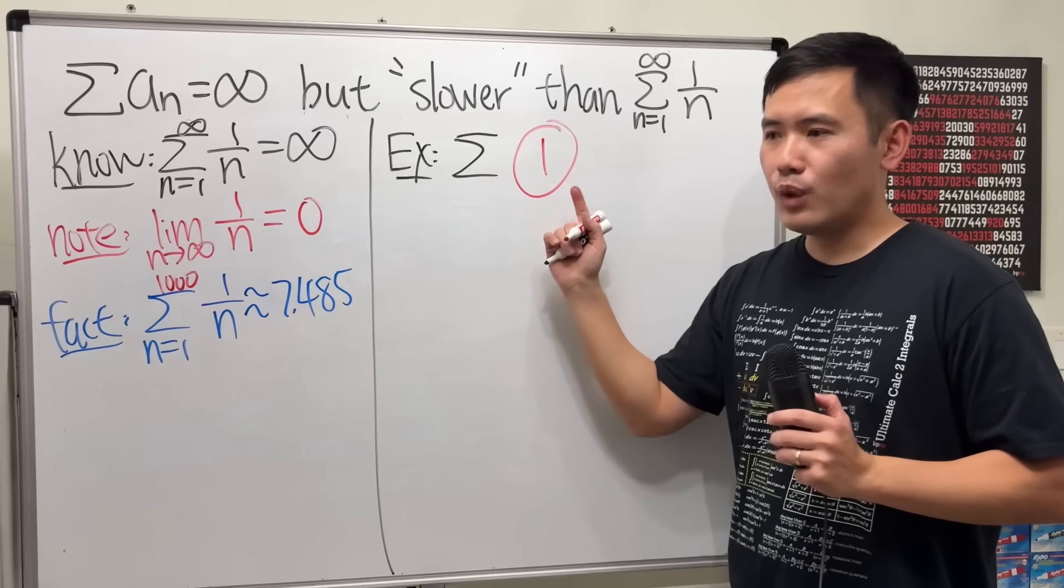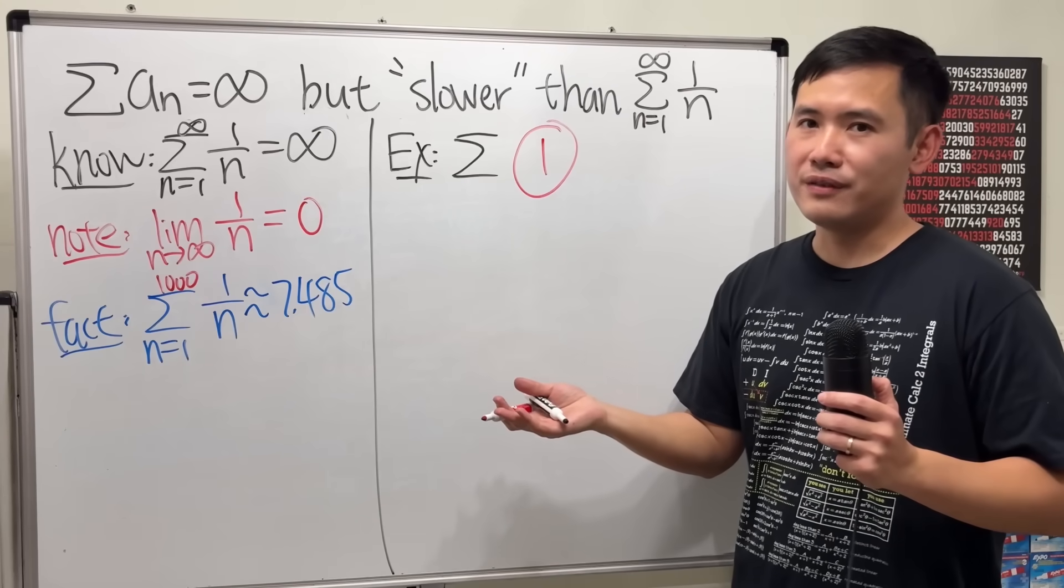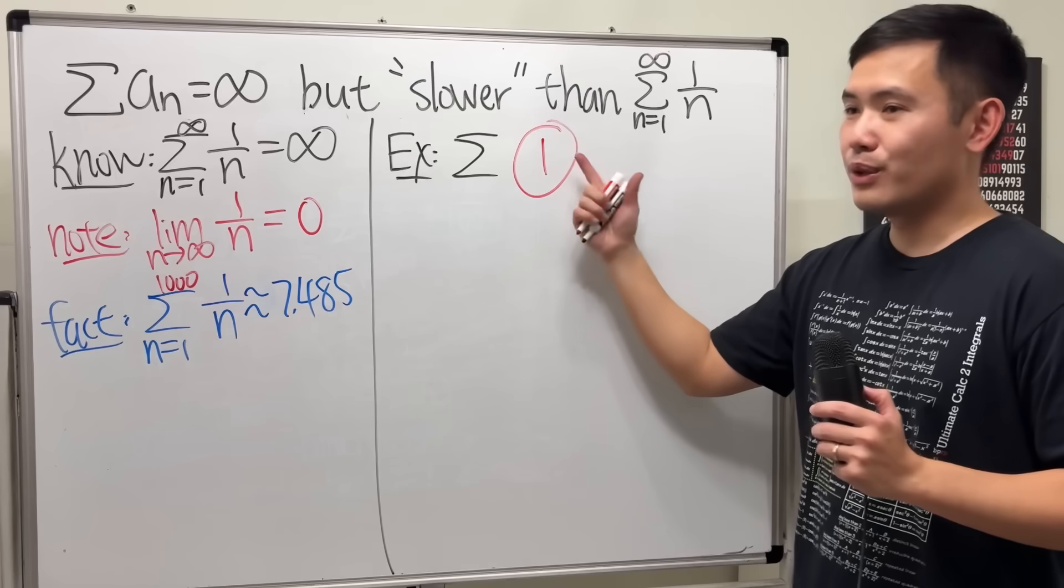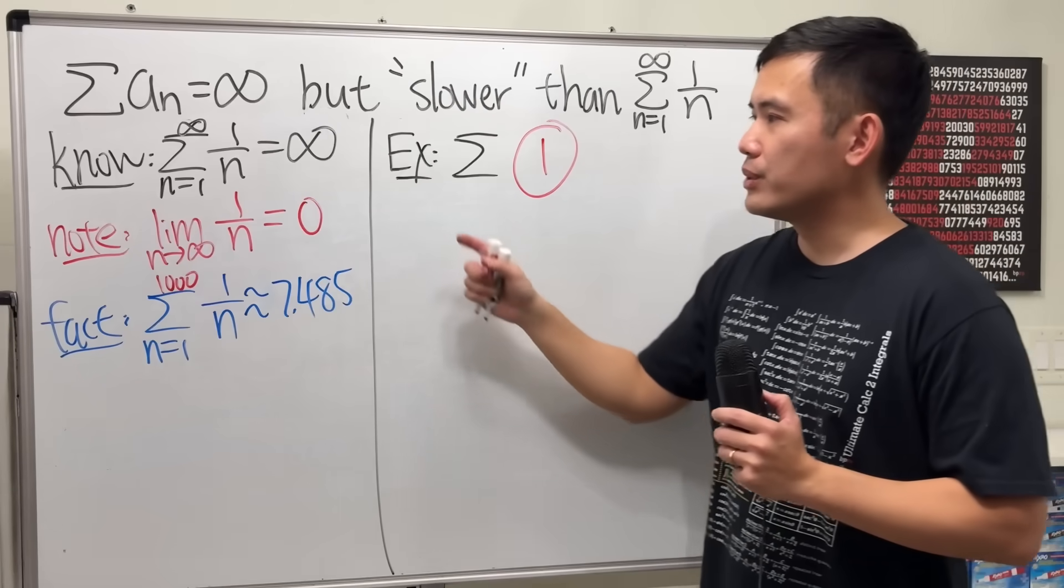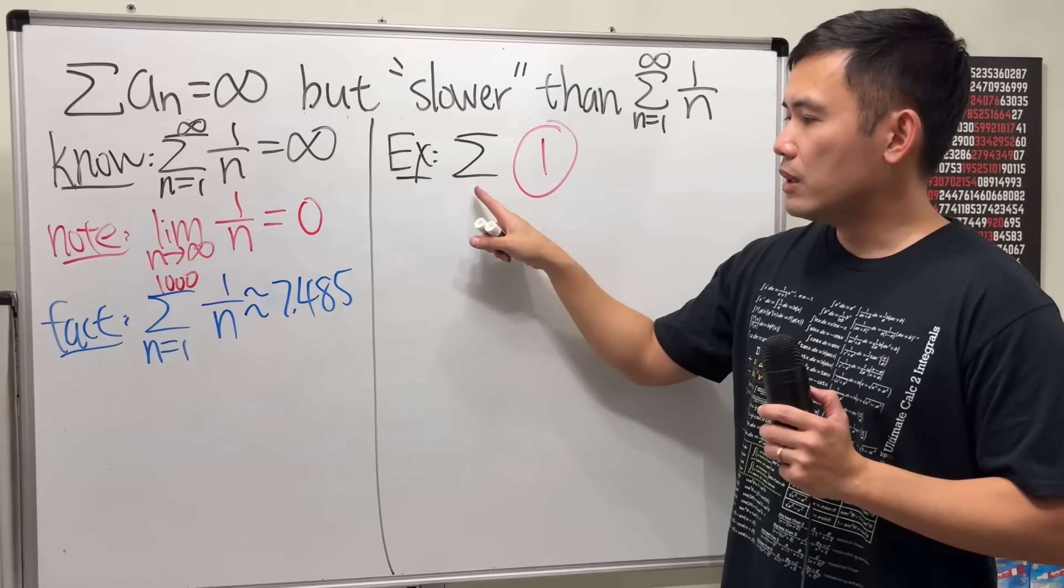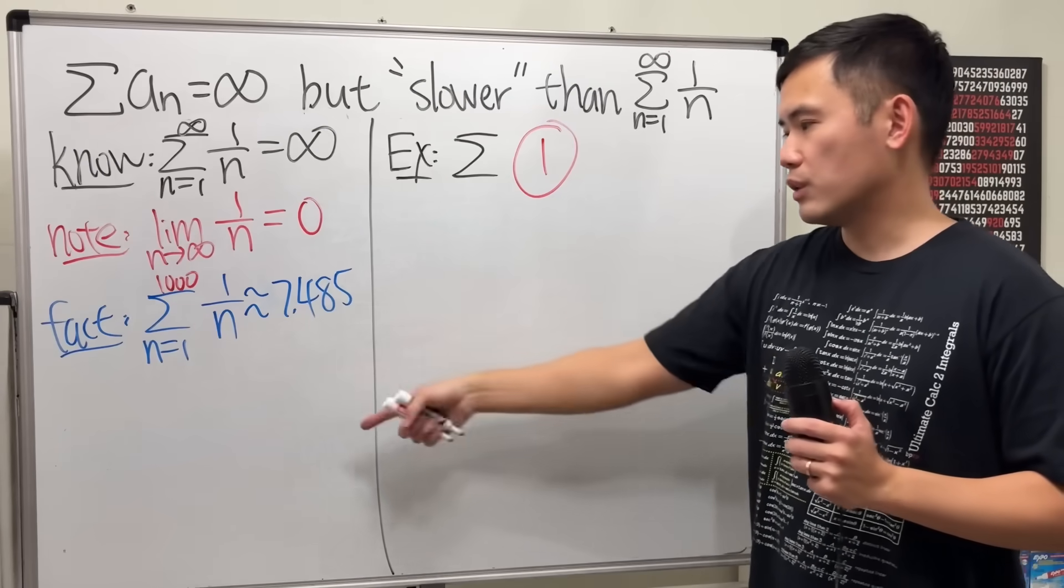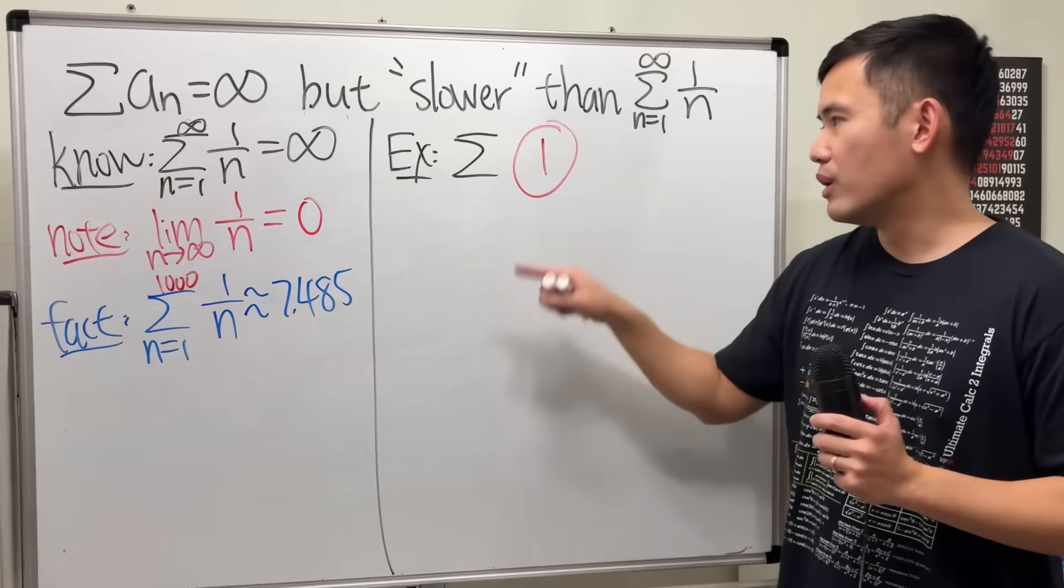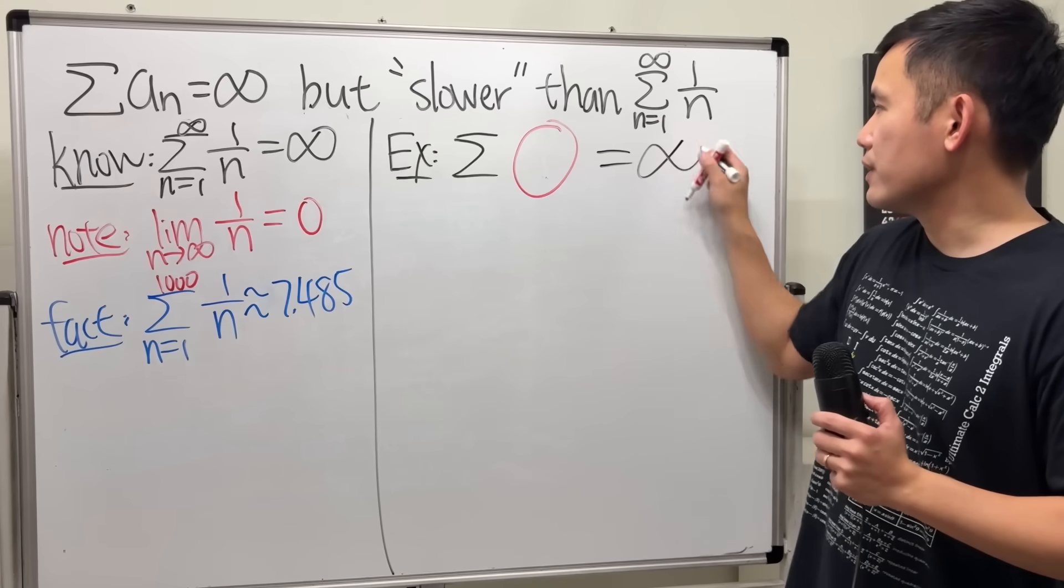if you're adding infinitely many 1s, of course, that will be infinity. But this goes to infinity much more quickly compared to this. Because if you add 1,000 1s, you get 1,000, which is much bigger than that. So 1 doesn't work. And remember, we want to get to infinity.